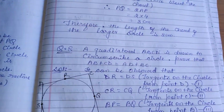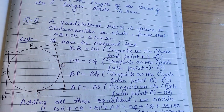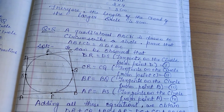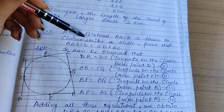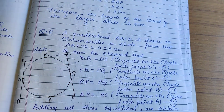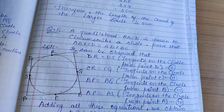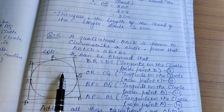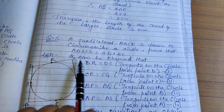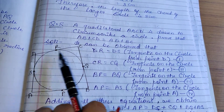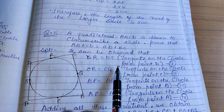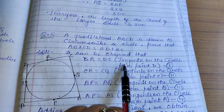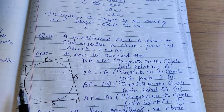Question number 8: A quadrilateral ABCD is drawn circumscribing a circle. Prove that AB plus CD equals AD plus BC. It can be observed that DR equals DS, because both are tangents to the circle from point D — equation 1.